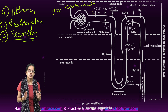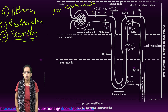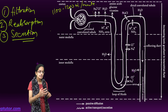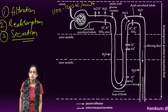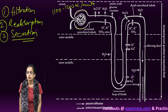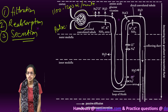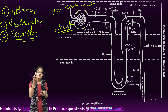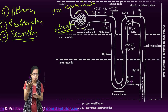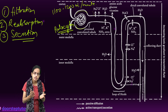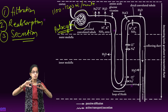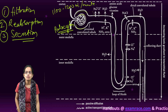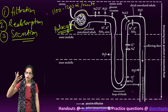This filtration process occurs in three layers. First is the endothelium of the glomerular blood vessels. The next is the epithelium of the Bowman's capsule, also known as podocytes. From the podocytes, there are minute spaces known as filtration slits through which filtration takes place. The third is the basement membrane, attached between the endothelium of the glomerulus and the epithelium of the Bowman's capsule.